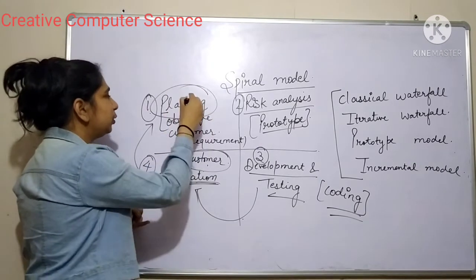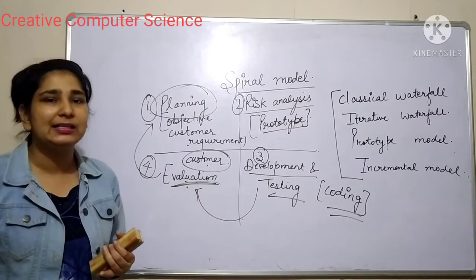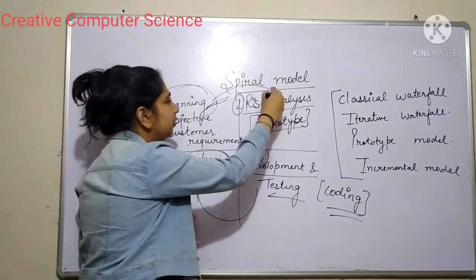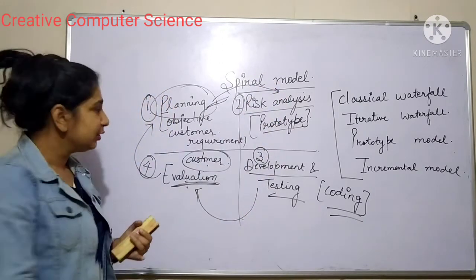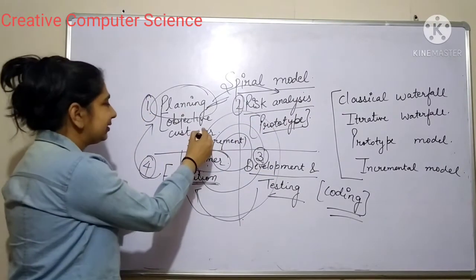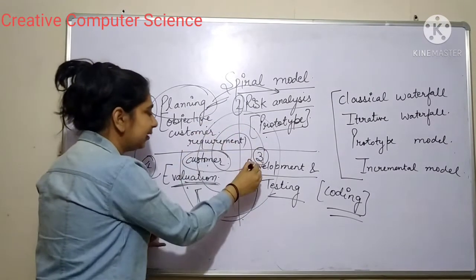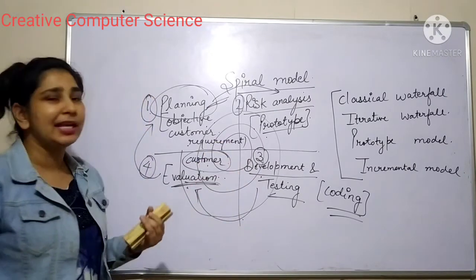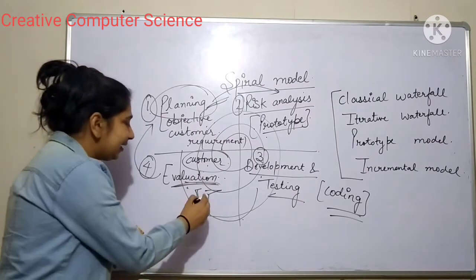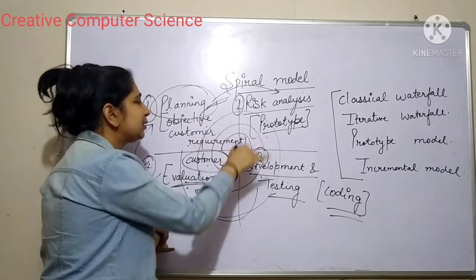They will again do the planning. If your customer says I need more functionalities in my software product, then again you will be doing planning, then again you will be doing risk analysis. So these phases keep getting repeated — that's why it is called a spiral model. You will go to the first step, second, third, fourth, then again first, second, third, and fourth. This process keeps on repeating unless your customer gets satisfied. Unless your customer gets satisfied, you will keep on moving in this spiral model.